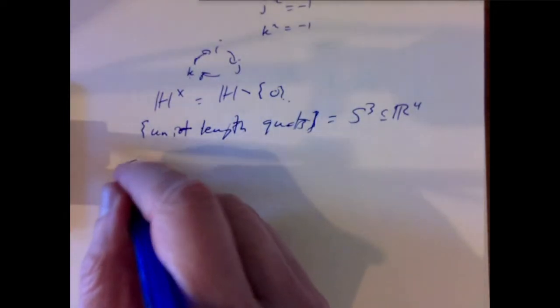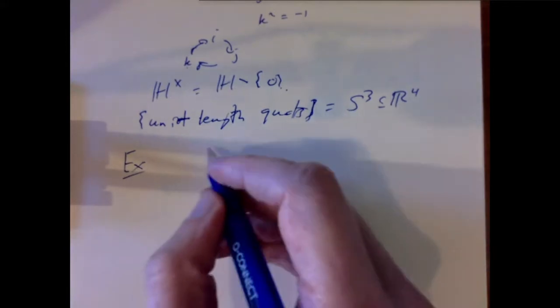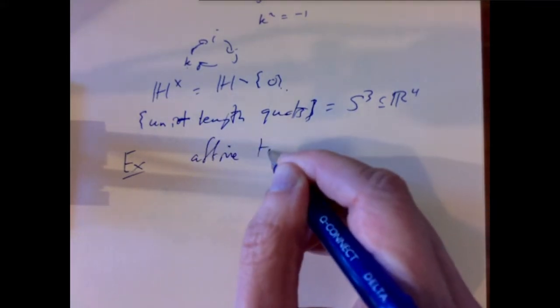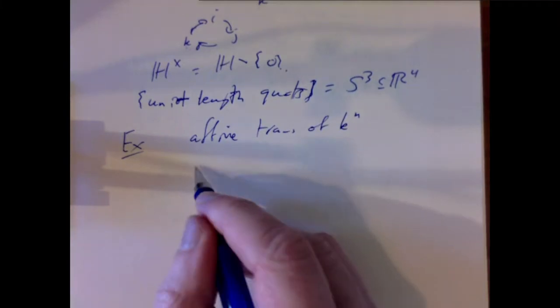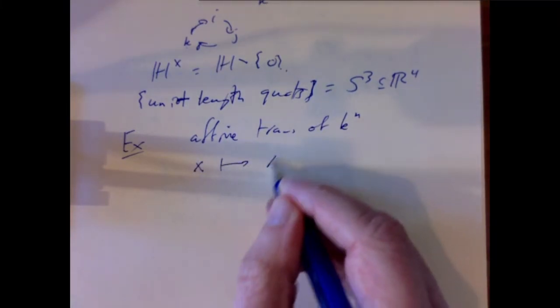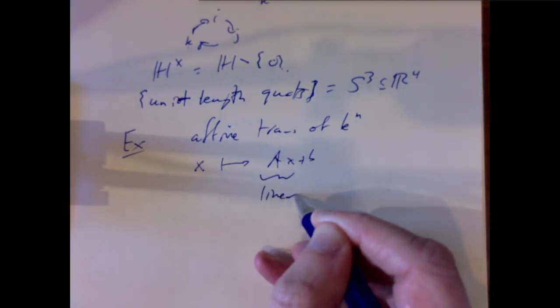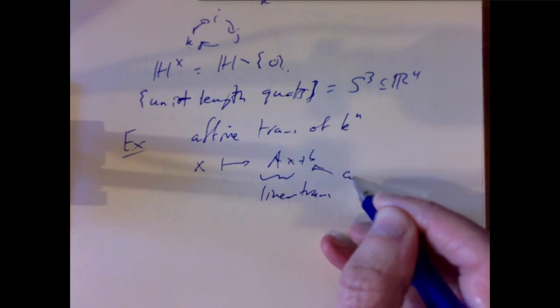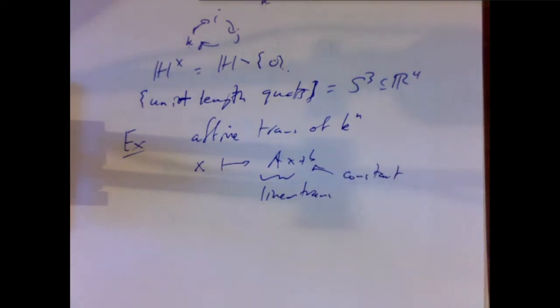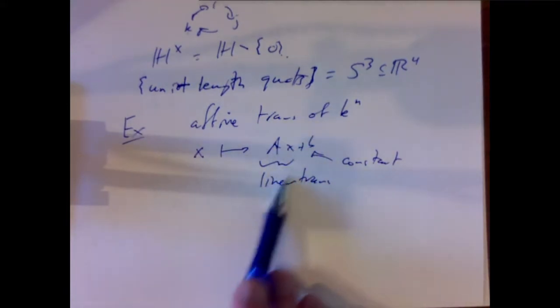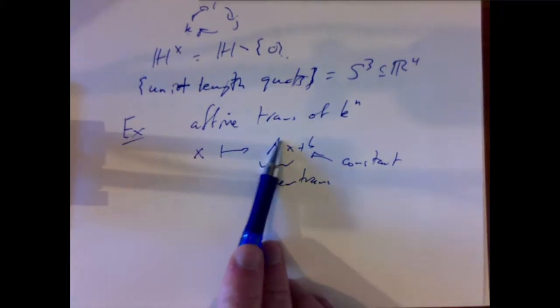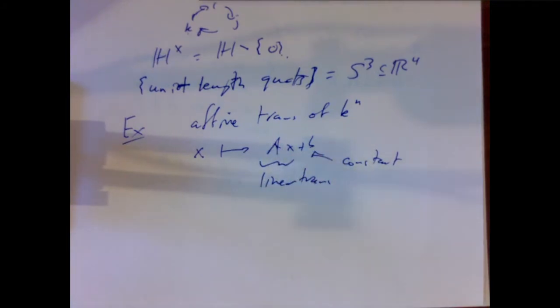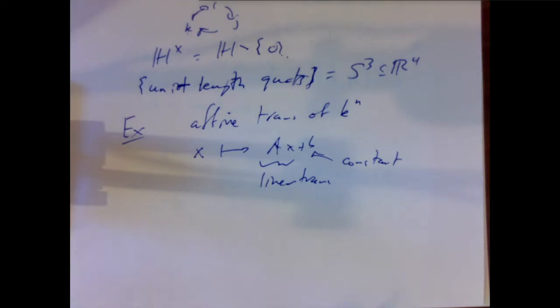Another example is the affine transformations. An affine transformation of k^n means a transformation of the form x goes to Ax + b, where the first part is a linear transformation and the second part is a constant translation by a constant vector. The set of all such affine transformations is a Lie group — you can take as variables the entries of the matrix and the entries of the translation vector.